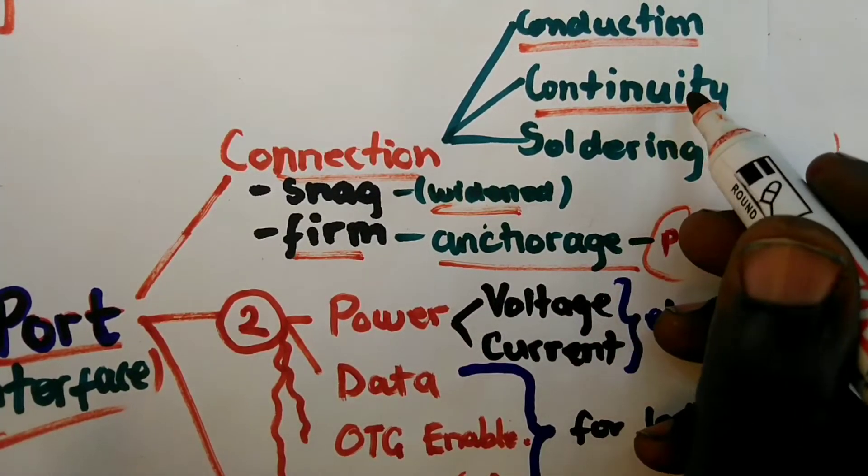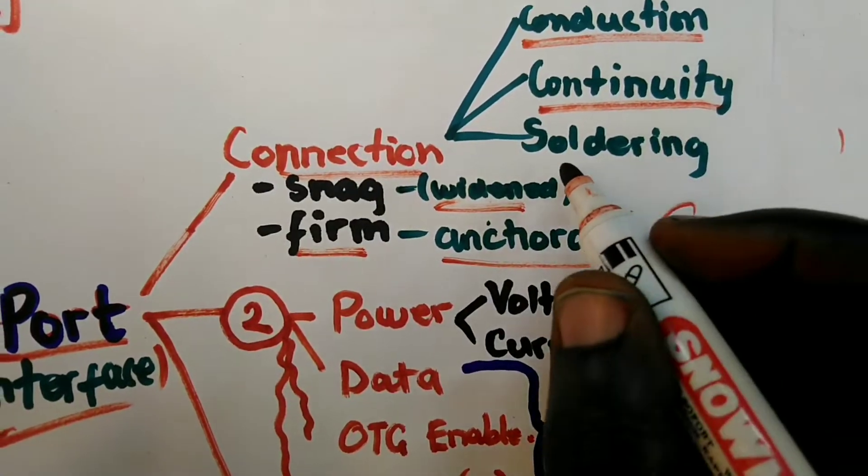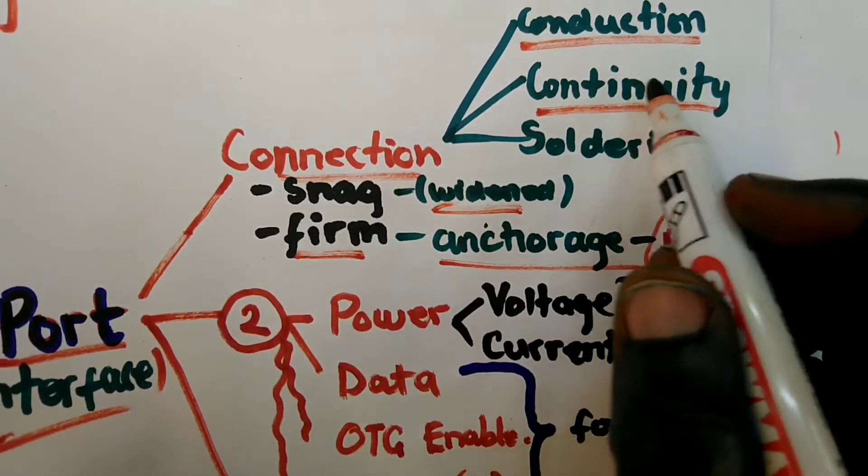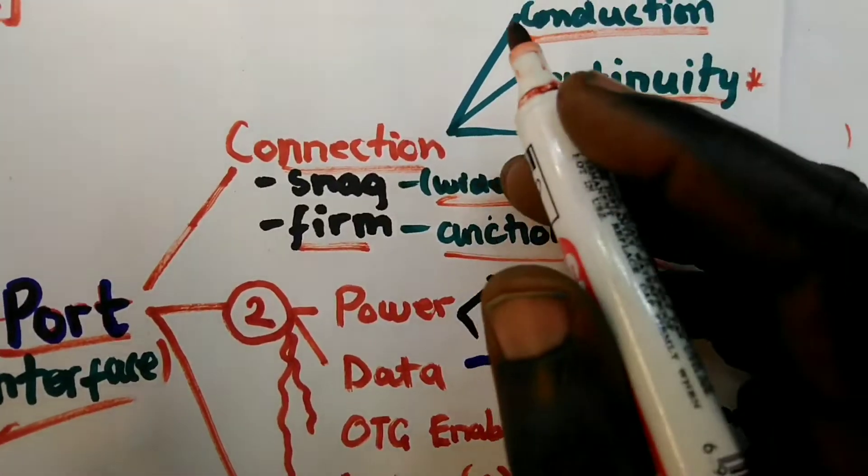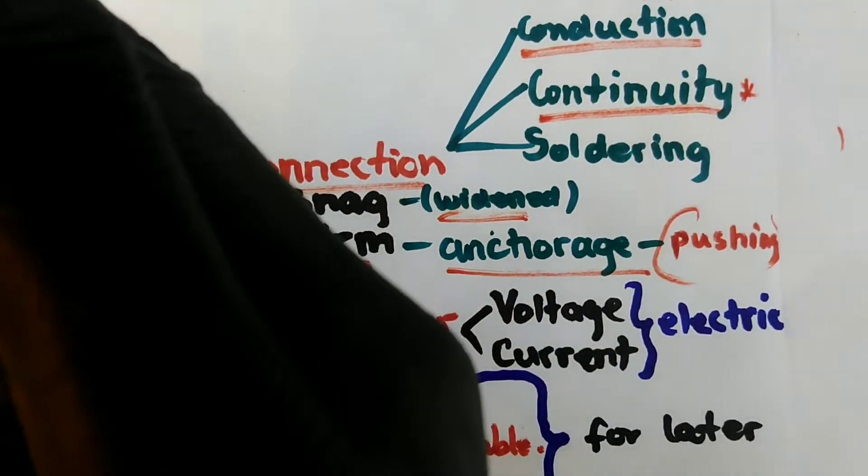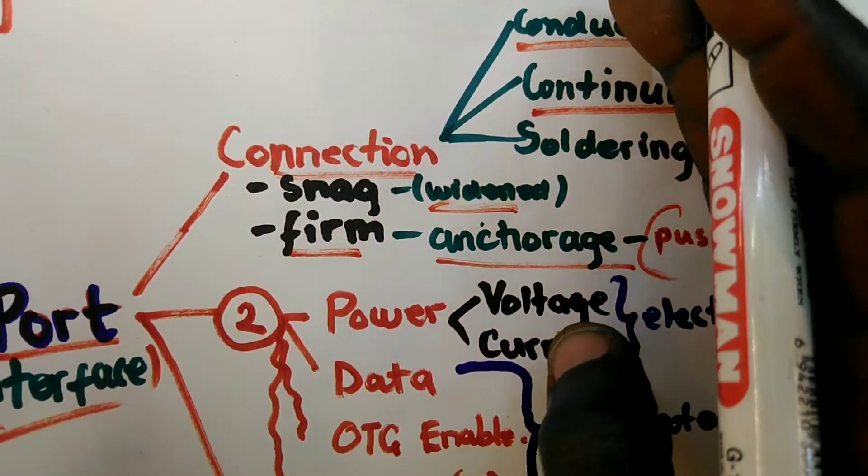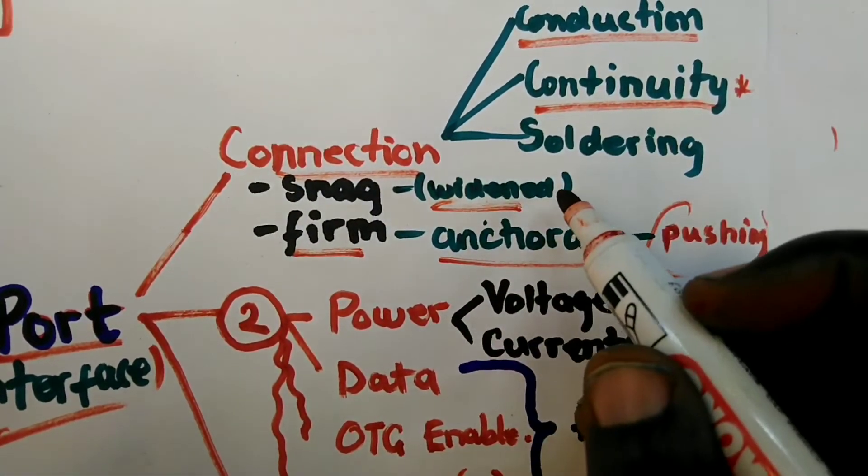And now when you know conduction and conductors, that brings us to the concept of continuity. If you're able to measure the resistance or conductance of a wire, you can be able to estimate continuity. Continuity simply will imply that something is moving from one end to the other without terminating in between.